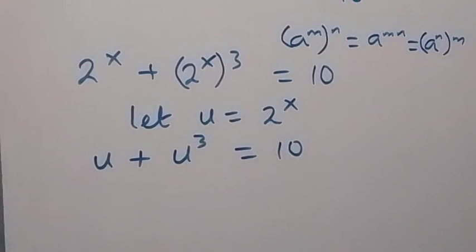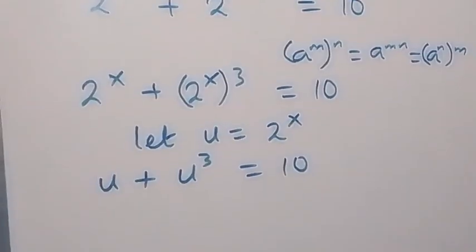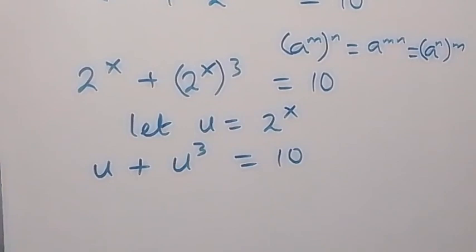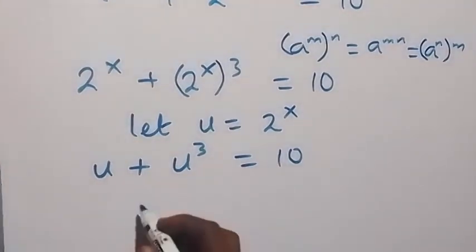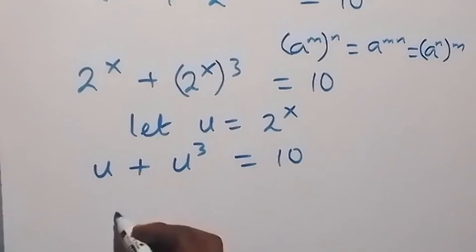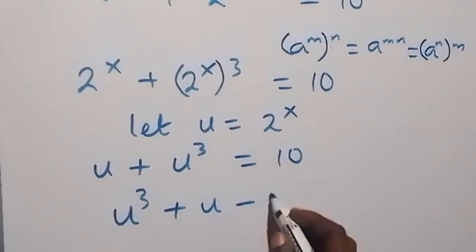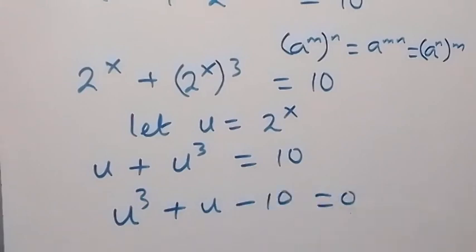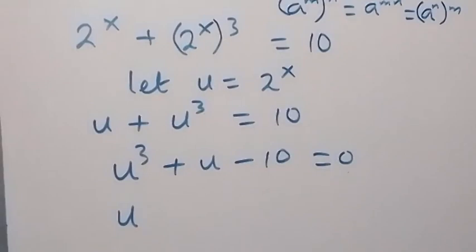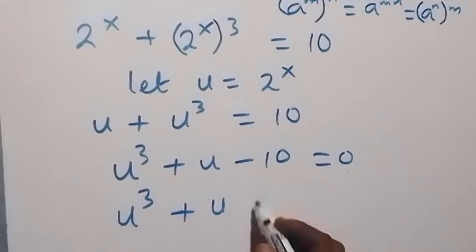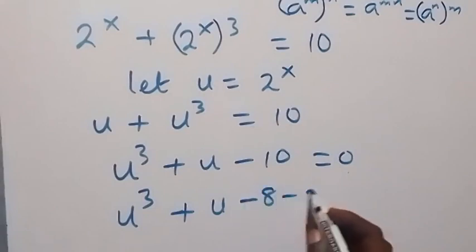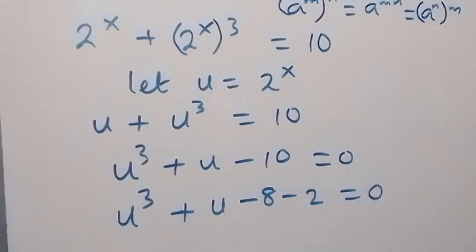We can use this to form a cubic equation. By taking 10 to the other side and rearranging, we have u raised to power 3 plus u minus 10 equals 0. Let's write minus 10 here as minus 8 minus 2, then equals to 0.